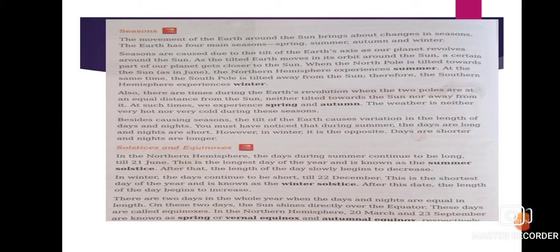Seasons are caused due to the tilt of the Earth's axis as our planet revolves around the sun. As the tilted Earth moves in its orbit around the sun, a certain part of the planet gets closer to the sun. We all know that the axis of Earth is tilted — meaning a little slanted. When the slanted part of the Earth revolves around the sun, a small area of Earth gets closer to the sun.